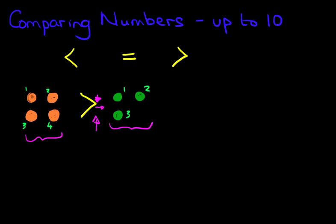Now let's look at another example. This time we have one orange and one more — so we've got two oranges. But on the right hand side we've still got three green apples: one, two, and three. Now which symbol do you think belongs in the middle? Let's count them — we've got one, two oranges. How many green apples are there? One, two, three. There are more green apples than there are oranges.